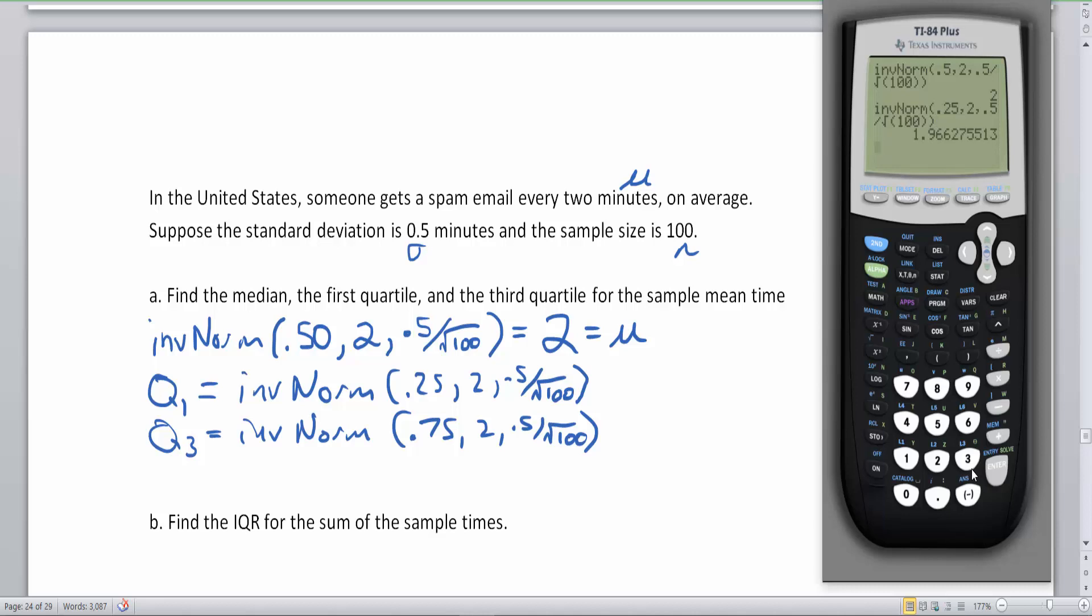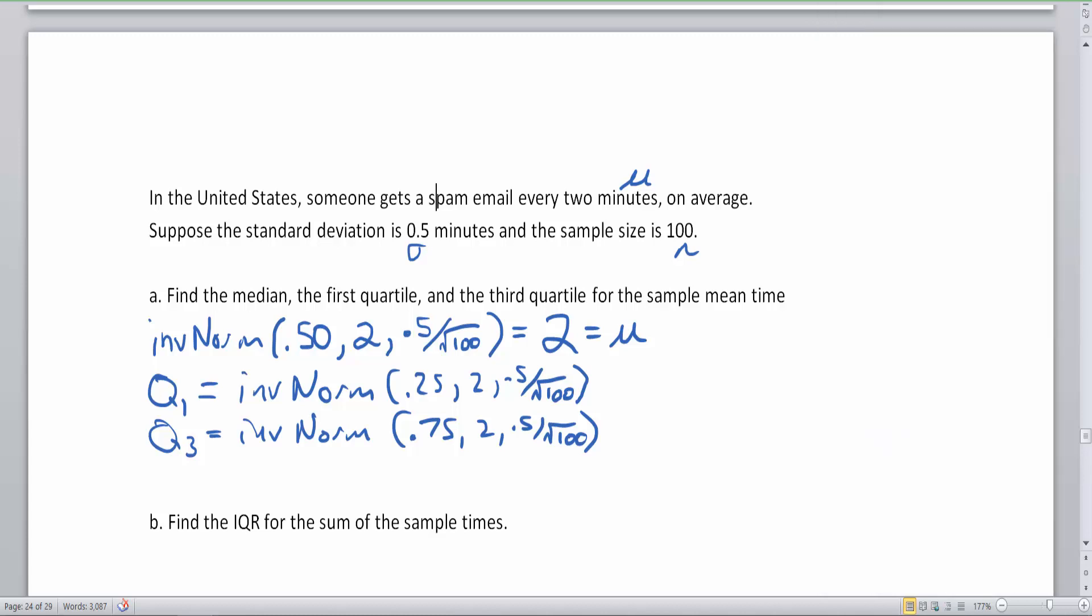1.97. That's not a percentage. That is the number of minutes. 1.97 minutes I will have to wait until I get my next spam if I'm on the 25th percentile. Now check this out. I can click second and the enter button and get this entire equation back and just push my arrow key up, change that to a seven instead of a two and hit enter. And there's my third quartile score. And so I now have those at 1.97 and 2.03. 1.97 is my number of minutes at the 25th percentile and 2.03 is the number of minutes at the 75th percentile.